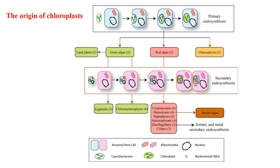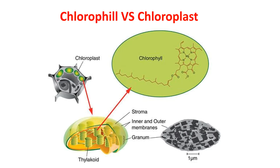The chloroplast, which is considered to have originated from free-living cyanobacteria through endosymbiosis, plays a key role in photosynthesis and in many biosynthetic activities. Now we will see the difference between chlorophyll and chloroplast, because there is a lot of confusion between them. Chlorophyll is the pigment involved in photosynthesis, found in the thylakoid membrane of the chloroplast. The chloroplast is the organelle involved in photosynthesis, mostly found in leaves of plants. Both give a green color to plants.